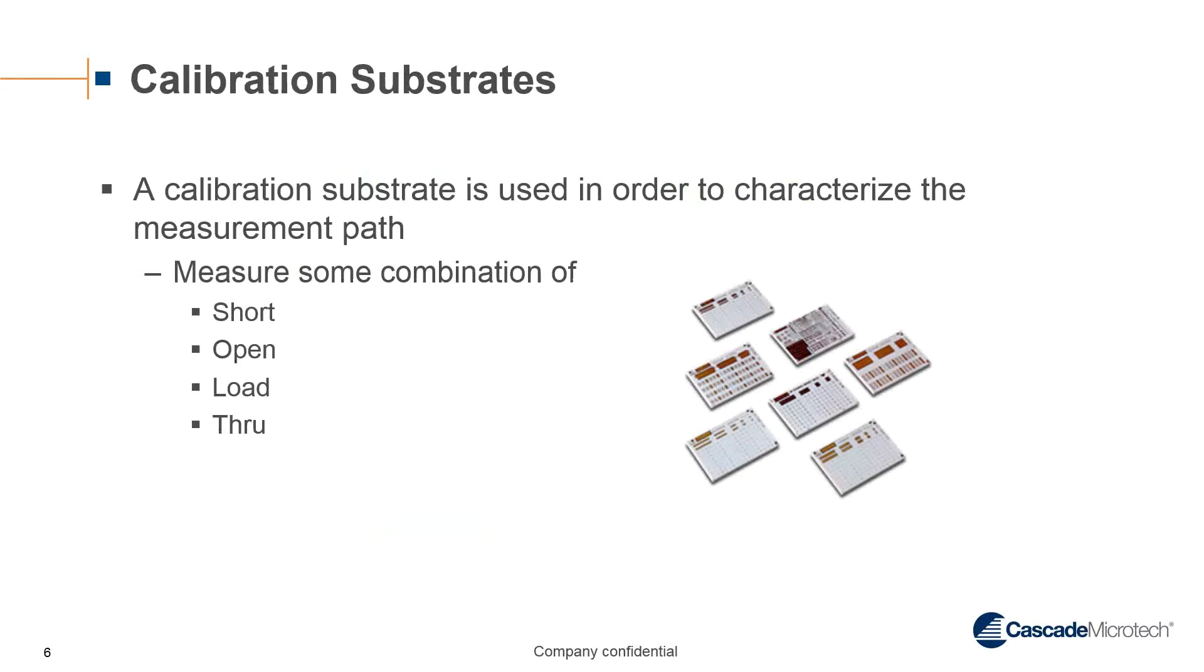In order to do your calibration, you do need several pieces of equipment. Perhaps the most important one on top of your test hardware is your calibration substrate. You use this to characterize the measurement path of your test hardware, which includes the cables and the probe card. In order to characterize it, you measure some combination of short, open, load, and through RF standards. Because these standards on a calibration substrate are well-defined and understood, and you know what they should look like when you're only measuring the standard, you can use that then to characterize the error terms that were in the previous slide.